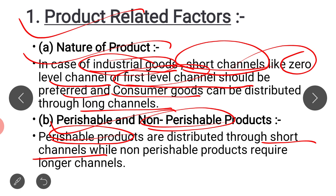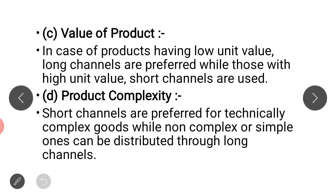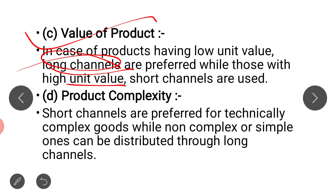For non-perishable products like soap, oil, sugar, and salt, we can use longer channels of distribution. Another product-related factor is the value of the product. If your product is low value, such as grocery products, we prefer long channels. If your product is high value, like diamond jewelry or gold jewelry, then we prefer short channels of distribution.